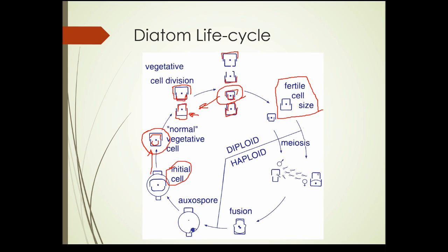The fertile cell divides by meiosis, forming a haploid cell — meaning a cell that has only half of the DNA of the adult organism. These haploid cells fuse and result in something called an auxospore, which develops into a new, full-sized diatom cell. It's a complicated life cycle, but in order to maintain the average size they have to go through this process.